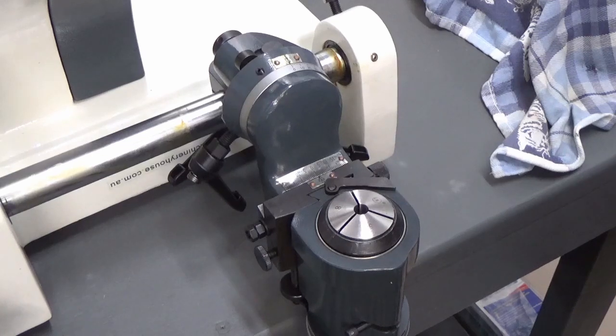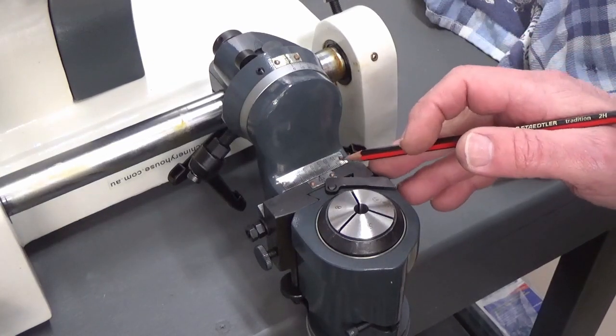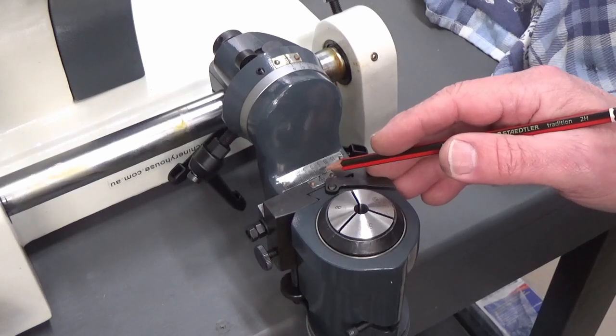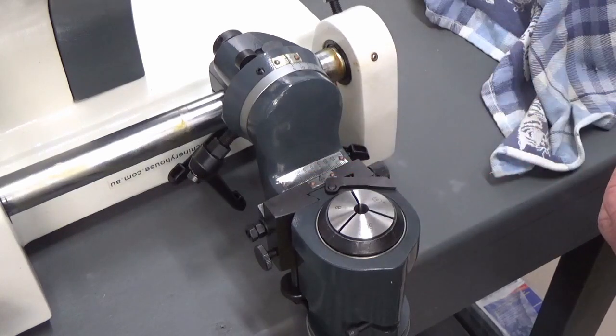So what we've got here is a D-bit grinder. We have graduations along here starting at a zero point and it goes 0 to 15 one way and 0 to 15 the other way.